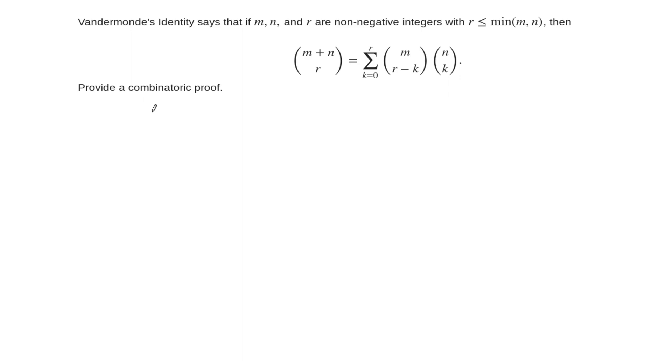Hey guys, so in this example we want to prove something called Vandermonde's identity. This says that m plus n choose r is equal to the sum, k goes from 0 to r, of m choose r minus k times n choose k. Add all those up and you should get m plus n choose r. We're going to provide a combinatoric proof of this, so this is going to be a fun one.